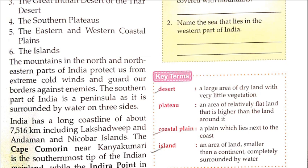The mountains in the north and north-eastern parts of India protect us from extreme cold winds and guard our borders against enemies. The northern mountains protect India from the very cold winds coming from the Himalayas, because the Himalayas are very high and covered with snow. The mountains also prevent enemies from neighboring countries from entering.